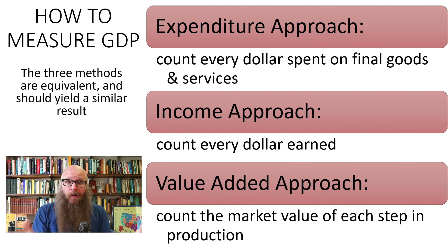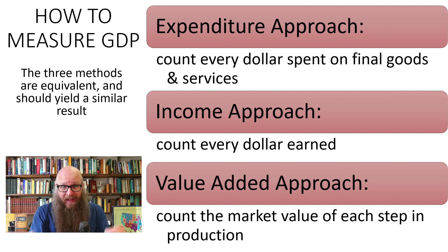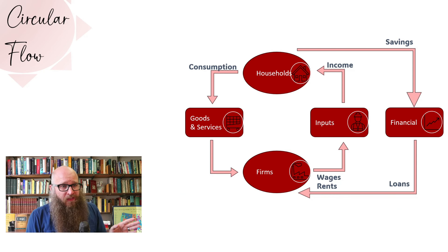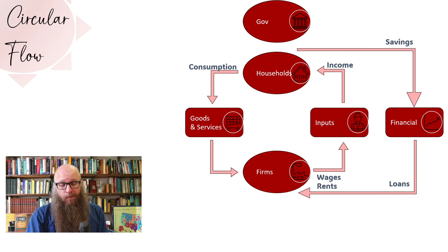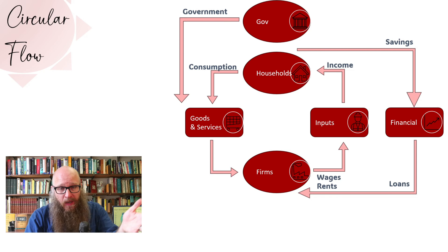All three methods are theoretically equivalent, and when we take it to the real world and try to estimate it with real data, they should yield a similar result. Let's go back to our simple model of the economy and add a few more bits to it. First, the government — they buy things too. We call it government expenditures.